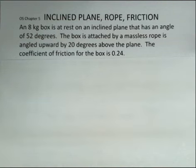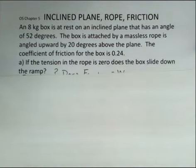The box is attached with a massless rope that runs up the plane, but not parallel to the plane. The rope's at an angle of 20 degrees higher than the plane angle, and there's a coefficient of friction for the box of 0.24.